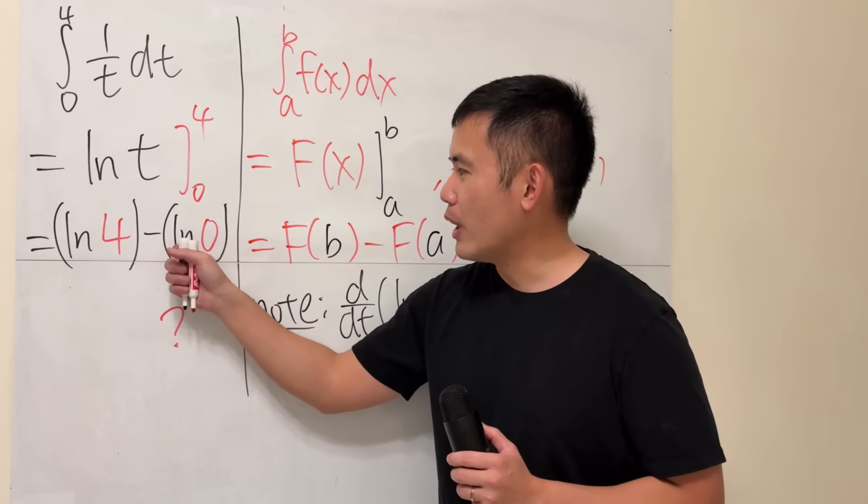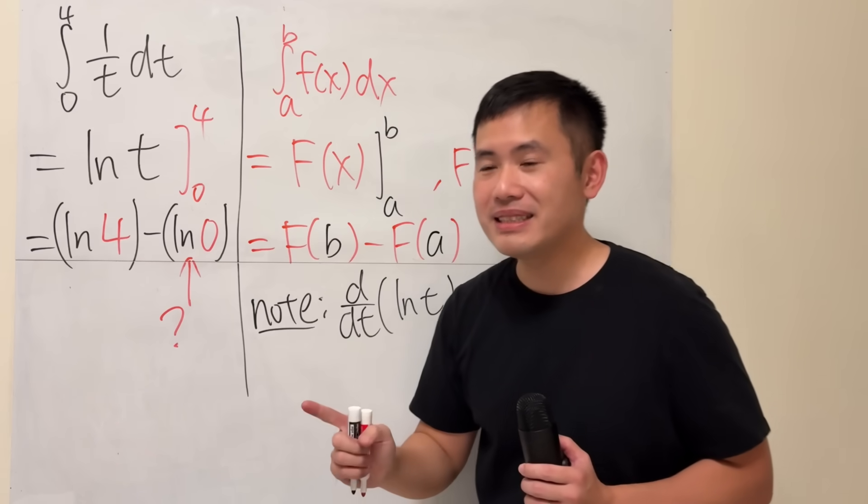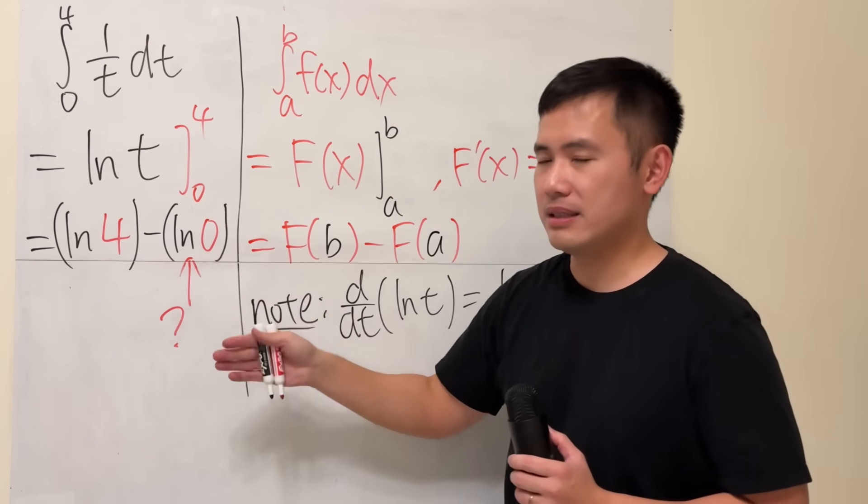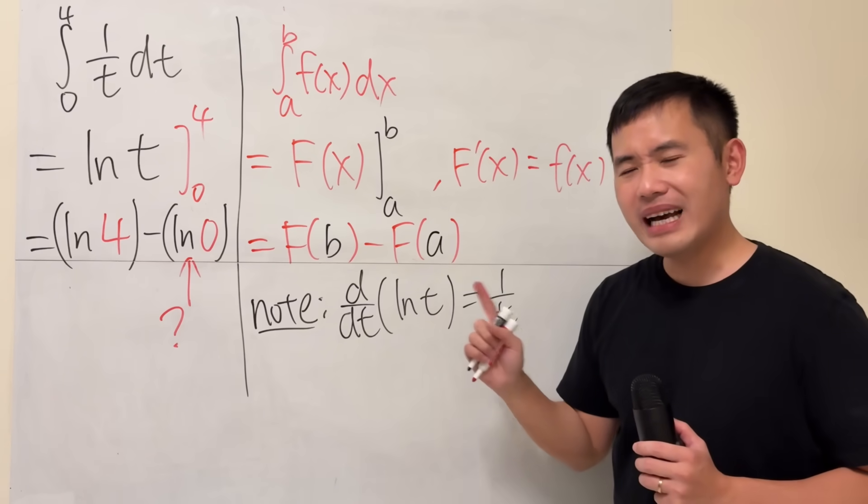So you will have to make sense of ln of 0 by taking limits, instead of just putting this down as undefined. So let's see how that works.